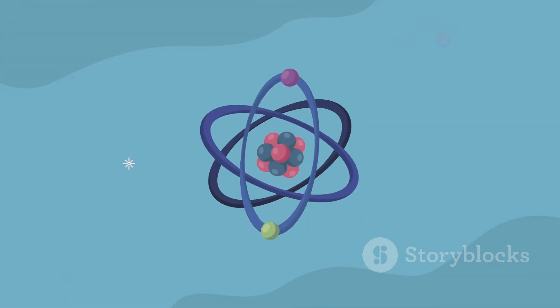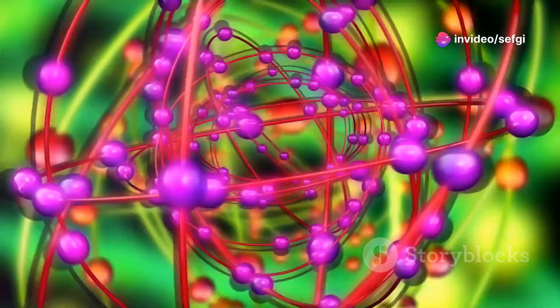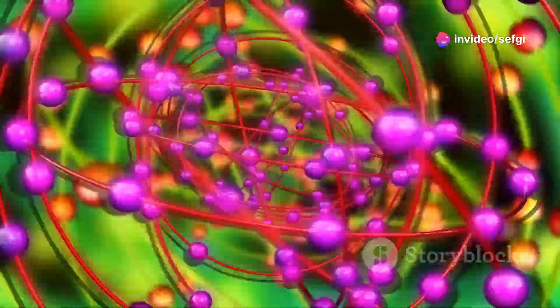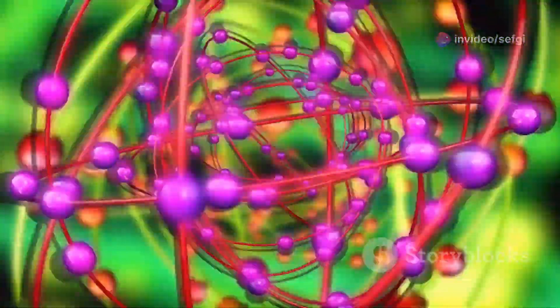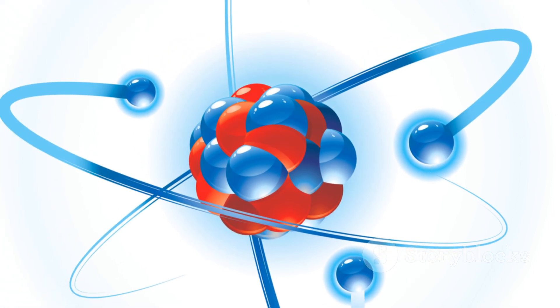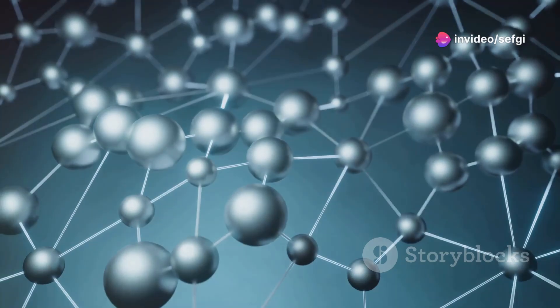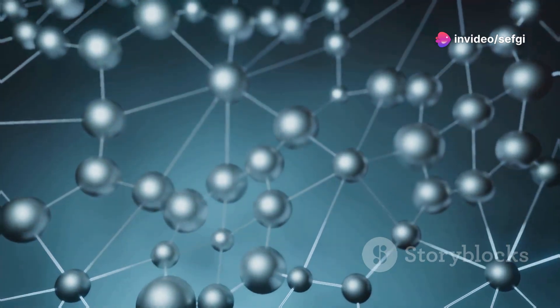The electrons, on the other hand, are spread out in a cloud-like region around the nucleus. They are constantly moving, buzzing around the nucleus like bees around a hive. The way these electrons are arranged determines the atom's chemical properties. It dictates how atoms bond with each other to form molecules and, ultimately, everything we see around us.